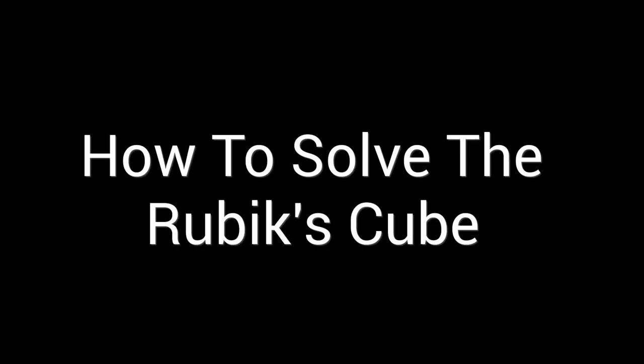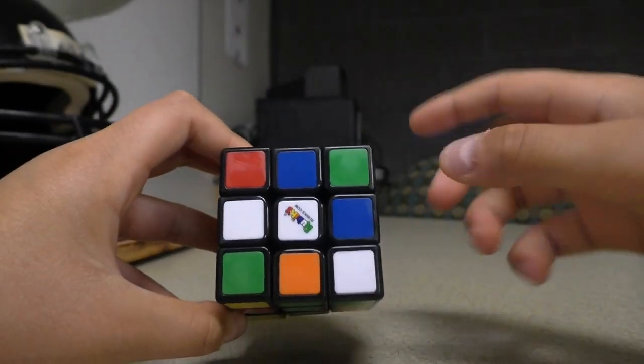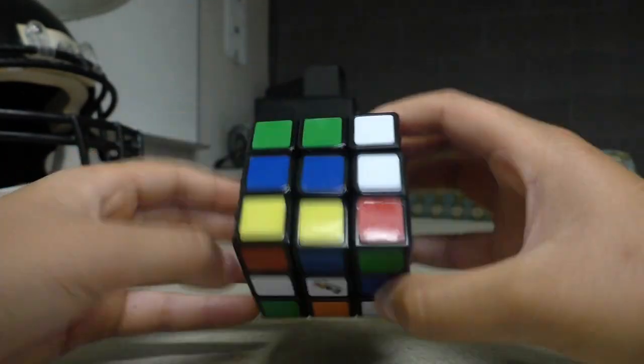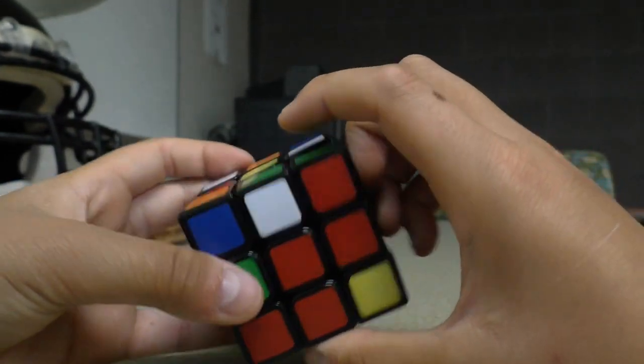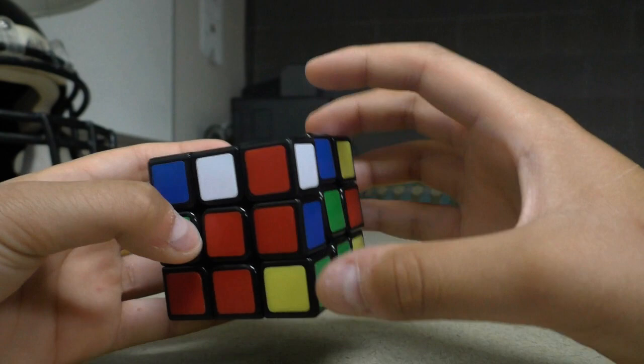How to solve the Rubik's Cube. The first step you want to do when you solve the Rubik's Cube is find the white cross. What you're going to do is flip your cube around and try to find any pieces that have white on them that are either at the top or the bottom.